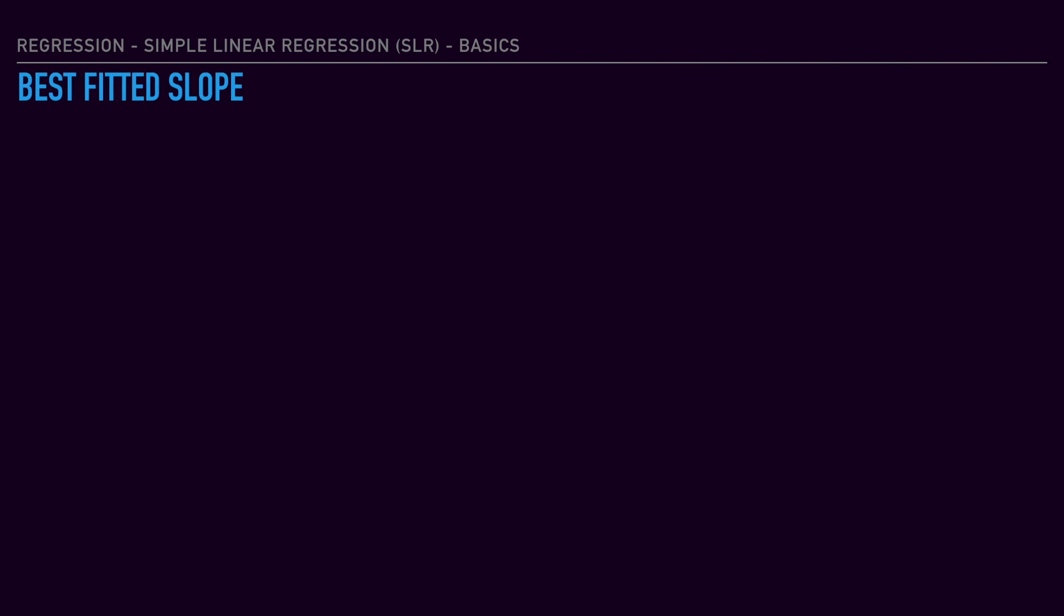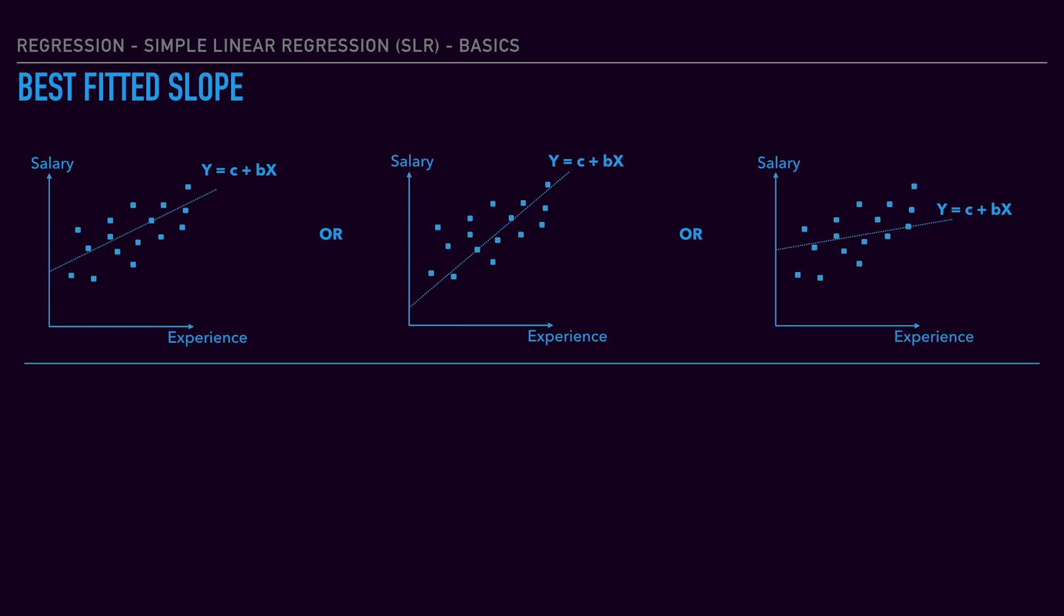Next, we are going to look into best fitted slope. This is the slope line. It needs to have minimum deviation or minimum error, so that it will have maximum performance. That is called best fitted slope. If you have 3 graphs with 3 slopes, this is the correct slope for the particular dataset. This involves the sum of squared errors. That is the best fitted slope.